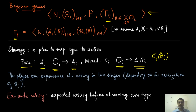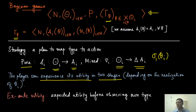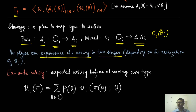In the Bayesian game, as seen in the last module, there are chronological developments in which the types realize and then players pick their actions and their utility realizes. Based on that, we can define that these players can experience their utilities in two stages: whether they observe their type or they do not observe their type.